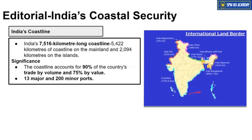The remaining coastline length belongs to the islands. If we talk about coastal areas, let's look at the significance of our country. 90% of our country's trade as far as overall volume is concerned, and 75% of our country's trade as far as value is concerned, passes through coastal routes. This shows the importance of coastal area surveillance and proper development, as India's trade is heavily dependent on its coastal areas. India has 13 major ports and about 200 minor ports.